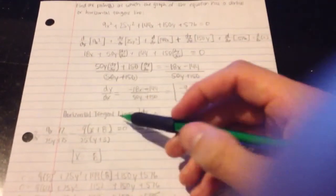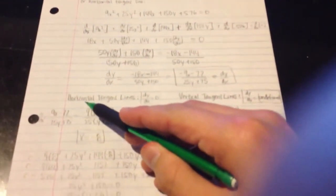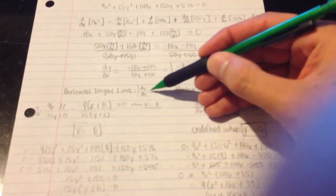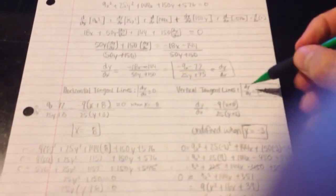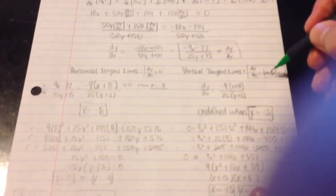Now at this point, horizontal tangent lines will be found where dy dx is equal to 0. Vertical tangent lines, on the other hand, will be where dy dx is undefined.